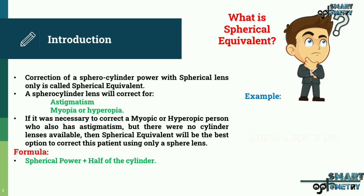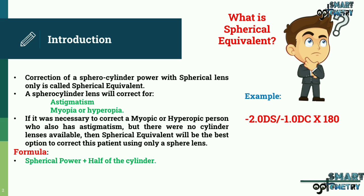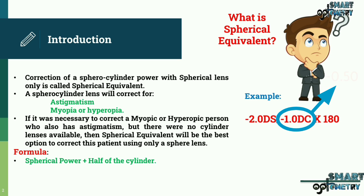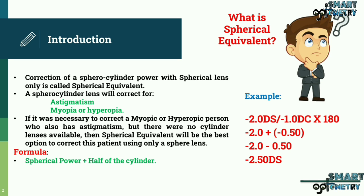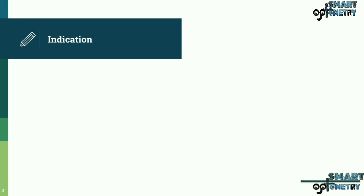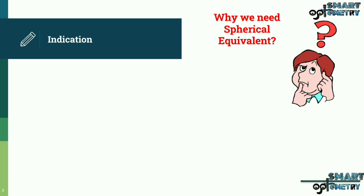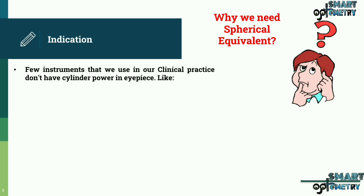For example, if our sphero-cylindrical power is minus 2 diopter spherical with minus 1 cylindrical power at 180 degree axis, here our spherical power is minus 2 and half of the cylinder power is minus 0.5. So according to our formula: minus 2 plus minus 0.5 equals minus 2.50 diopter spherical as the spherical equivalent.